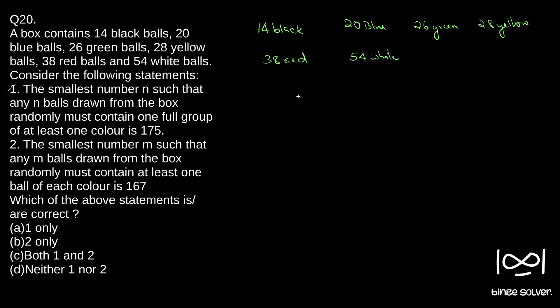We will take up the first statement: the smallest number n such that any n balls drawn from the box randomly must contain one full group of at least one color. In such questions we have to think about the worst case scenario and find the minimum number we have to pick in that worst case scenario — that will give us the smallest number that ensures this condition is satisfied.